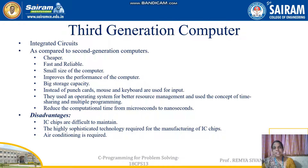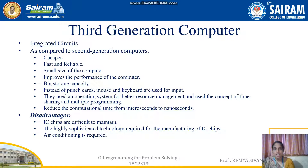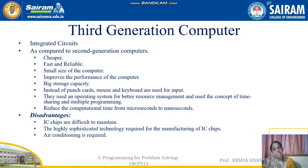Third generation computers used integrated circuits. IC chips are difficult to maintain, require sophisticated manufacturing technology, and air conditioning is required. Advantages include much smaller size due to ICs, ability to store more information, better speed, and lower cost. Keyboards and mouse replaced punch cards for input. Operating systems were introduced for better resource management. Time sharing and multiprogramming also appeared in this generation. Computation time improved from microseconds in previous generations to nanoseconds.